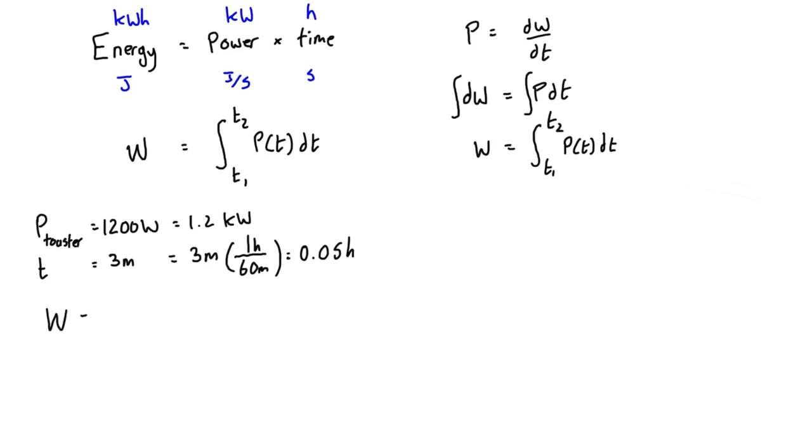Then the total energy consumed to toast that bagel is going to be W is equal to Pt. So that's energy is equal to power times time, which is 1.2 kilowatts times 0.05 hours. And so we're going to find that the energy consumption for our toast is equal to 0.06 kilowatt hours. Now that's a little bit of a nasty unit to have 0.06 something. So we can just multiply that by 1000 and write that as 60 watt hours. So that's the total energy consumption of this toaster to toast a bagel for three minutes.